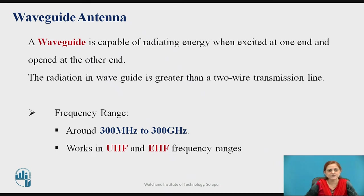We will briefly define the first two antennas and discuss the slot antenna in detail in today's session. A waveguide is capable of radiating energy when excited at one end and opened at the other end. Waveguide is used to pass high frequency signals, and the radiation in a waveguide is greater than that of a two-wire transmission line. The frequency range of waveguide antennas is around 300 MHz to 300 GHz, working in the ultra high frequency to extremely high frequency range.